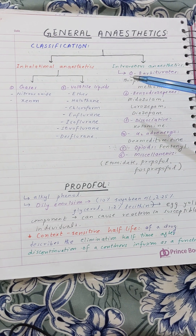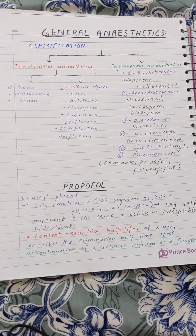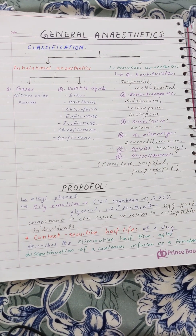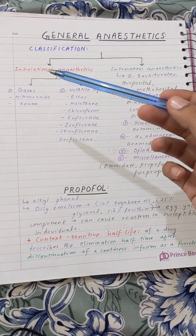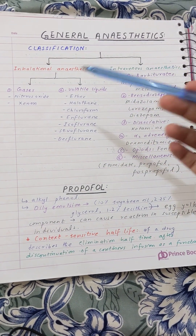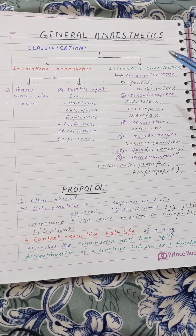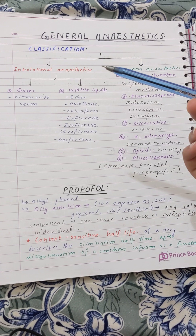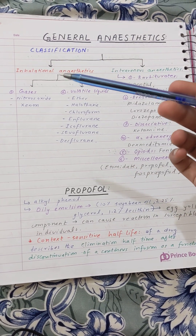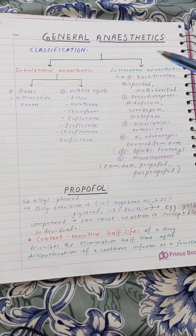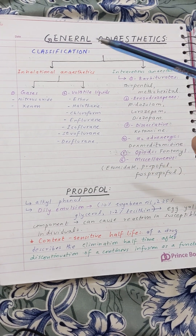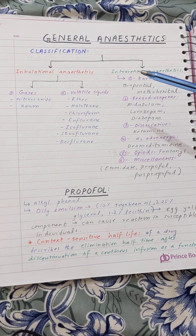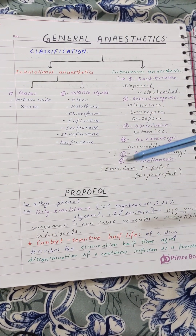We start with inhalational anesthetics and along with that IV anesthetics. The classification is actually based on the route of administration of these anesthetics — some of which we give from inhalational routes, some from IV routes, and some from gases. Mostly the classification is on the basis of drug groups.